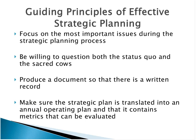There are some guiding principles to follow in strategic planning. You need to focus on the most important issues: what is critical for the success of your agency and or program? You need to be willing to question the status quo and the sacred cows and examine every option. You need to produce a written document that everyone can agree to. And finally, the strategic plan must be translated into an annual operating plan containing metrics that can be evaluated. The data from benchmarking tools can be essential in this process.